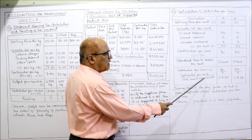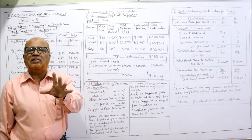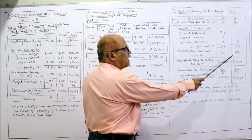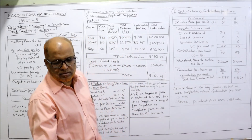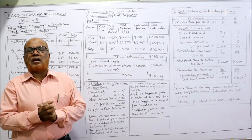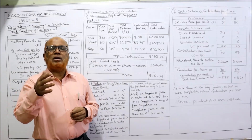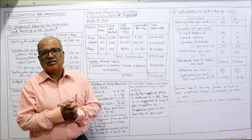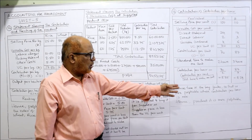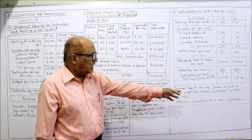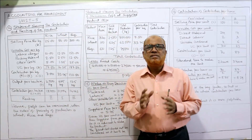Contribution per hour for product A = ₹35. For product B: contribution per unit is ₹87, time required is 3 hours, so contribution per hour = 87 ÷ 3 = ₹29. Product A gives ₹35 per hour and product B gives ₹29 per hour. Since time is the key factor, the product with higher contribution per hour is preferred — hence product A is more profitable. That concludes all 16 problems on CVP analysis.